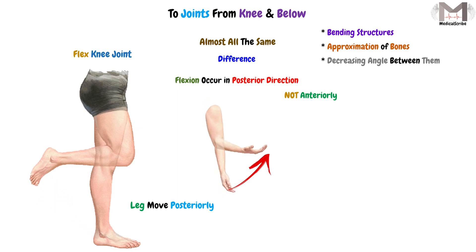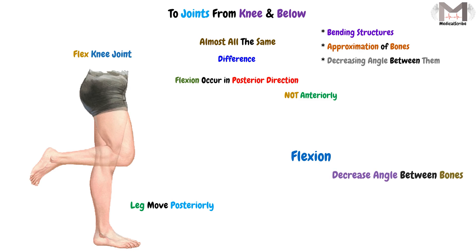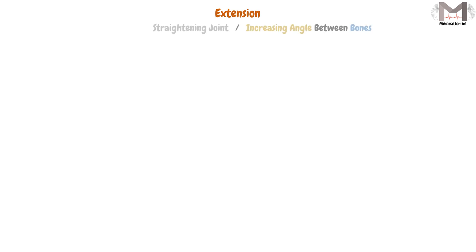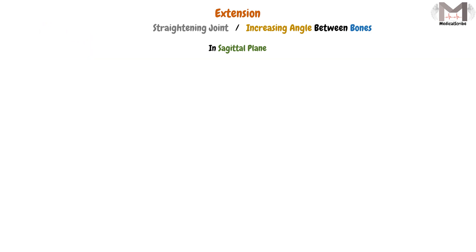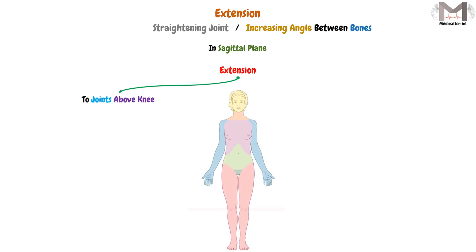To summarize: flexion means decreasing the angle between bones. Extension, on the other hand, means straightening the joint and increasing the angle between bones. Extension also occurs in the sagittal plane, and it will similarly be divided according to whether the joint is above the knee or from the knee and below.